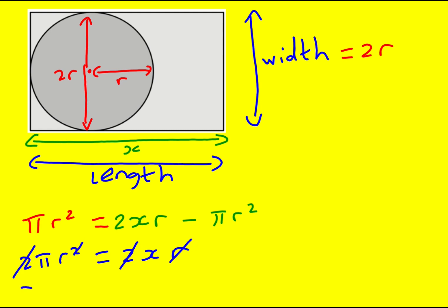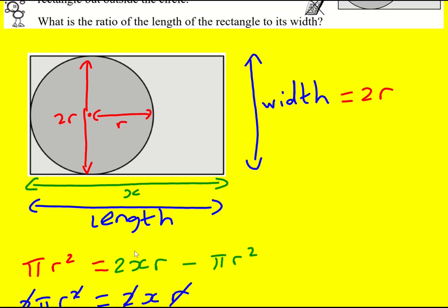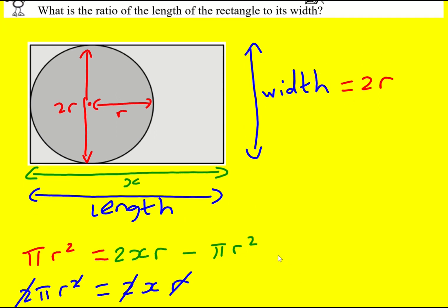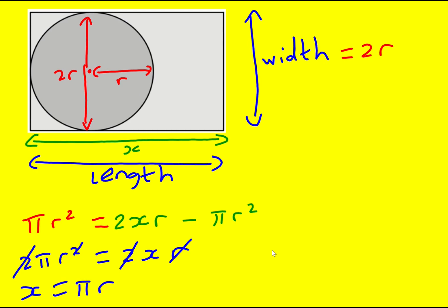So that means x = πr, and therefore the ratio of the length of the rectangle to its width is going to be